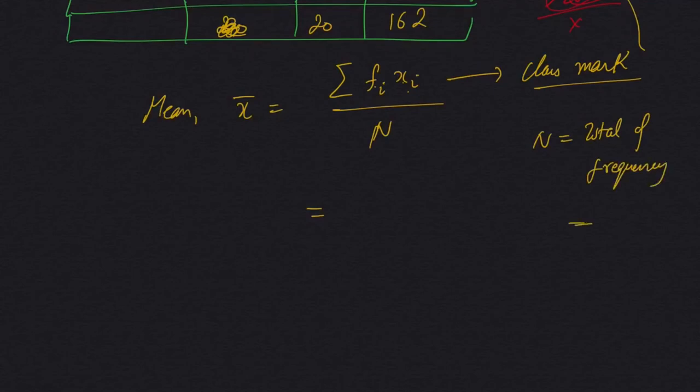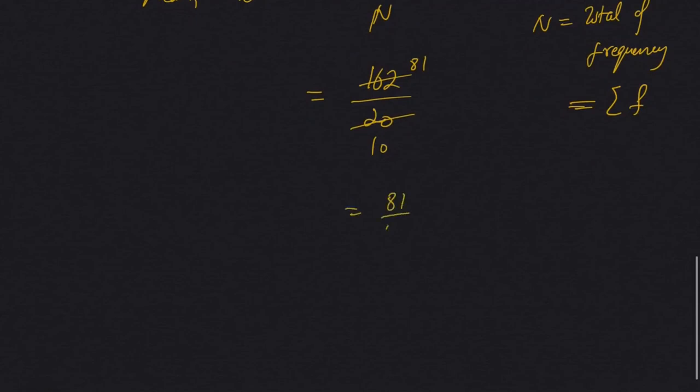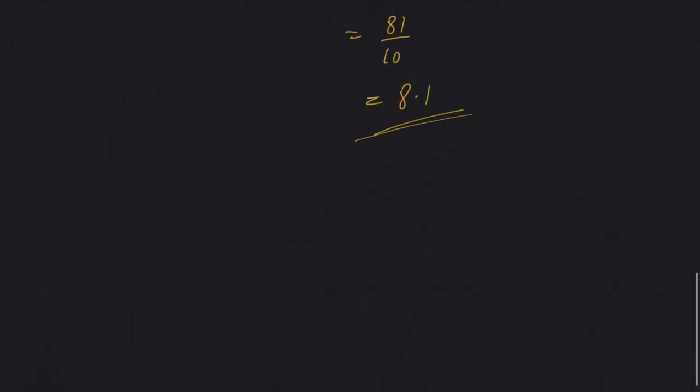n actually represents total of frequency, which is also denoted by summation of f. So 162 divided by 20, that will be 81 by 10, which equals 8.1.